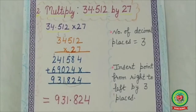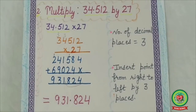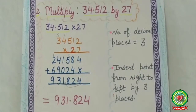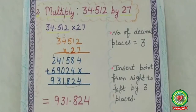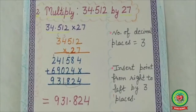Today we have learnt multiplication of decimals by 10, 100, and 1000, and multiplication of decimals by a whole number. Students, you are now able to solve the worksheet that we have sent in your Snap homework. Please also go through the YouTube links sent in your Snap homework. Have a nice day. Thank you.